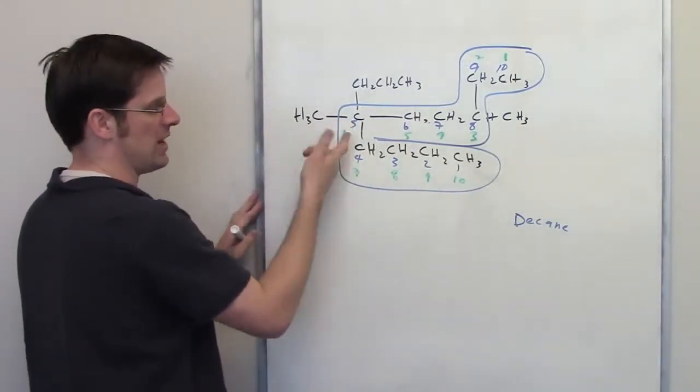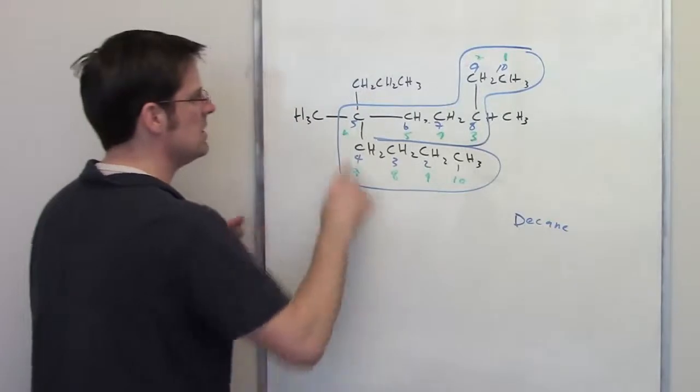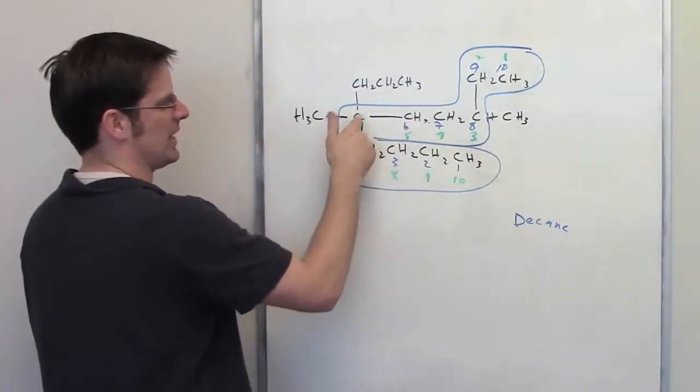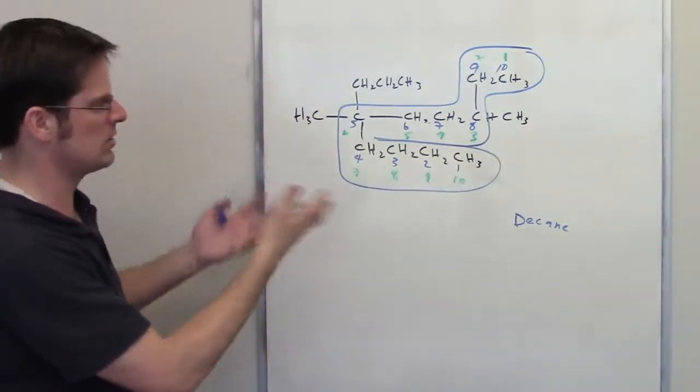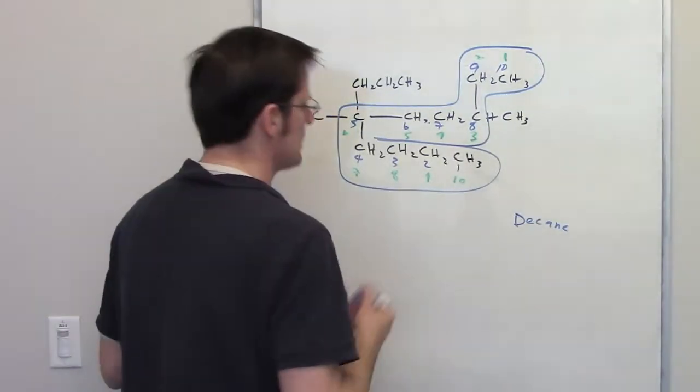Then we're going to note where the substituents are coming. Substituents are just anything dangling off of that chain. So I've got a CH3 dangling off of carbon 5 or 6, depending on which direction I go. I've got a CH2CH2CH3 dangling off of the same carbon. I've got another CH3 dangling off of carbon 3 or 8, depending on which color scheme I pick.